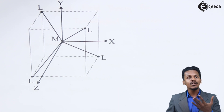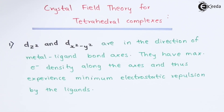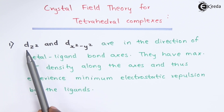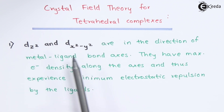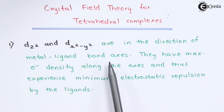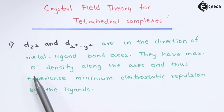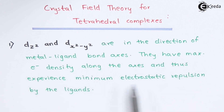The central metal atom consists of d orbitals. The dz² and dx²-y² orbitals are directed along the metal-ligand bond axes, so they have maximum electron density along the axis and thus experience minimum electrostatic repulsion by the ligands.